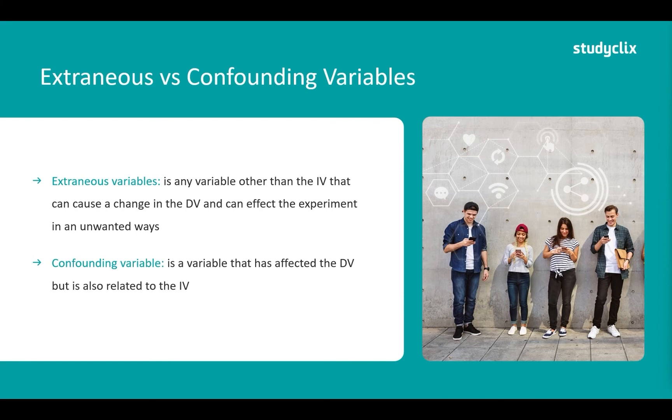Think about it this way: with extraneous variables, we don't know what effect they've had. With confounding variables, we know what they've done, but we just can't separate them from the independent variable. Let's go through some examples to contrast these two terms.